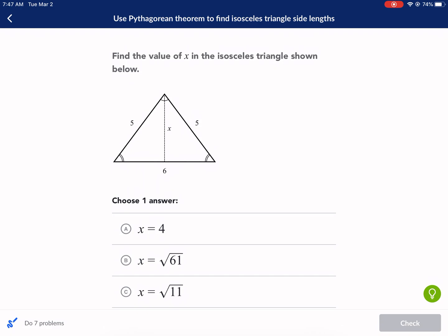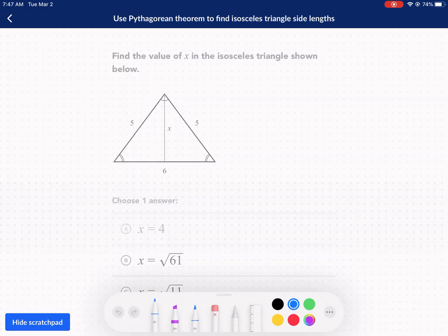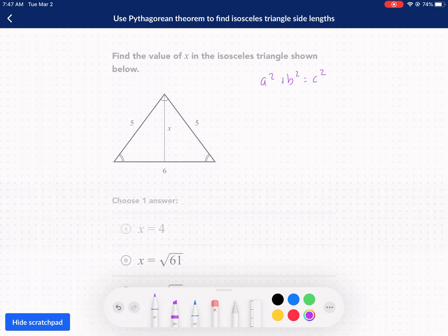Find the value of x in the isosceles triangle shown below. Okay, a couple things. One, Pythagorean Theorem: a squared plus b squared equals c squared, where a and b are the legs. Two, if we have an isosceles triangle as demonstrated here, then we have 5 and 5. That's important.